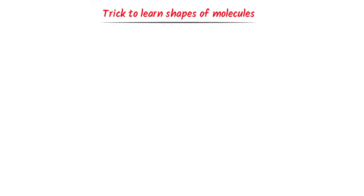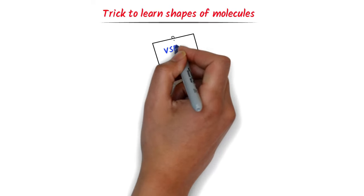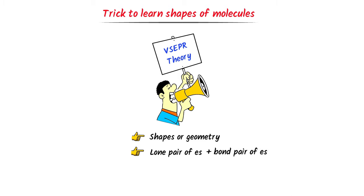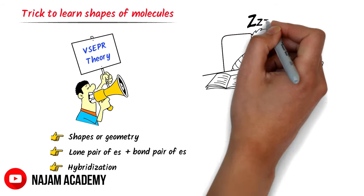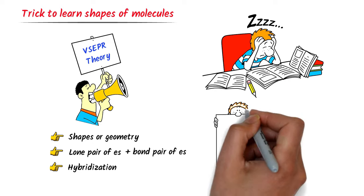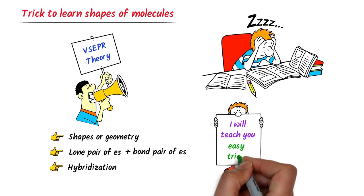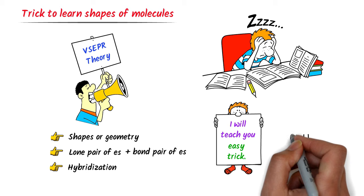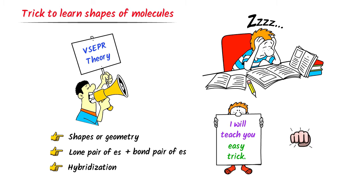Easy trick to learn shapes of molecules. We know that VSEPR theory teaches us about the shapes or geometry of molecules, number of lone pair of electrons, number of bond pair of electrons, and hybridization of different molecules. Many students find it difficult to memorize the shapes of molecules. I will teach you the super easy trick through which you can easily memorize the shapes and geometry of molecules in a very short time. Watch this lecture till the end.